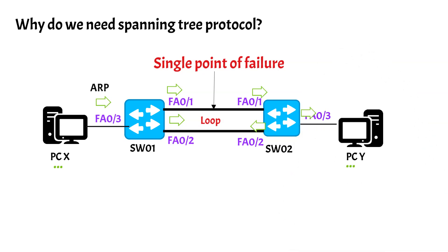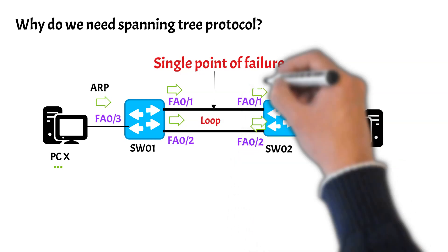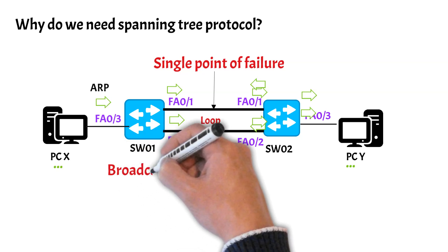The other broadcast frame from switch 1 arrives at FA0/2 of switch 2, and switch 2 forwards it back to FA0/1 and FA0/3. Switch 1 had sent two broadcast frames out of its FA0/1 and FA0/2 ports, so switch 2 receives each of them, creates two copies, and sends one back to switch 1 and the other to the PC. Switch 1 then keeps broadcasting these frames again to its other interfaces — this will go on forever until you shut down the network. This phenomenon is called a broadcast storm.